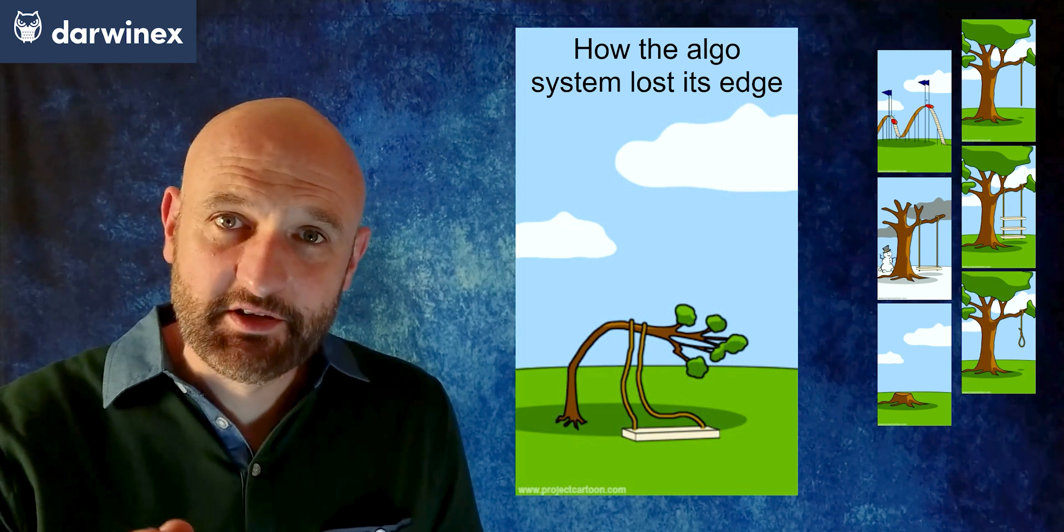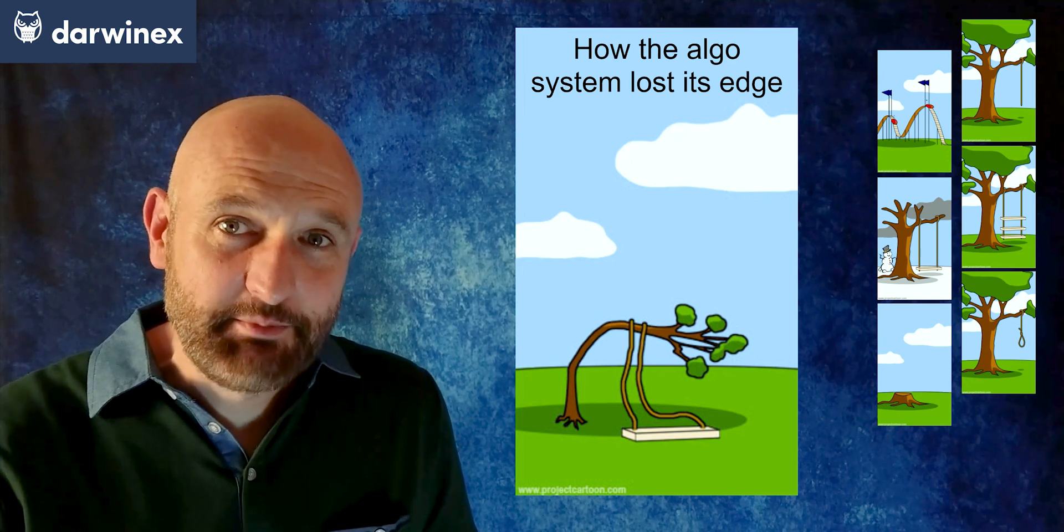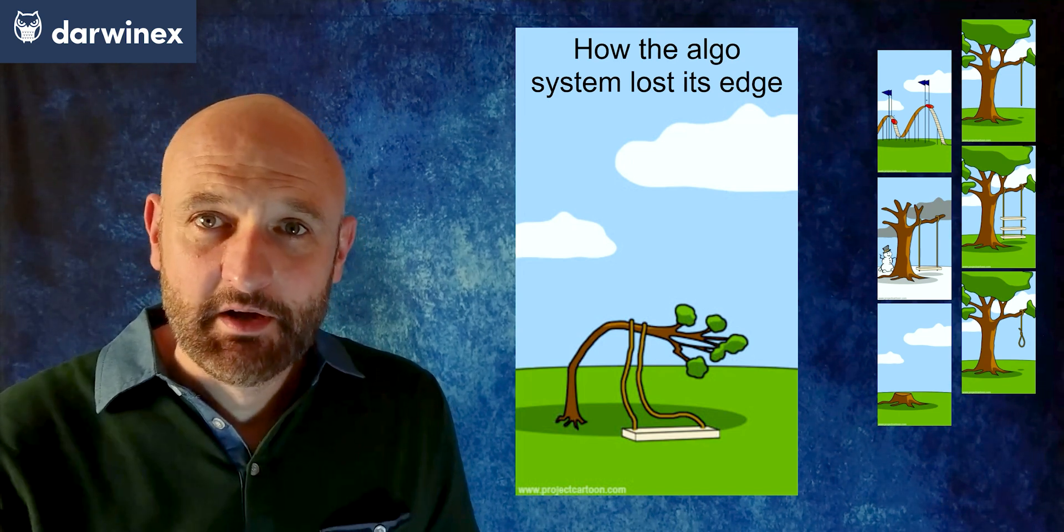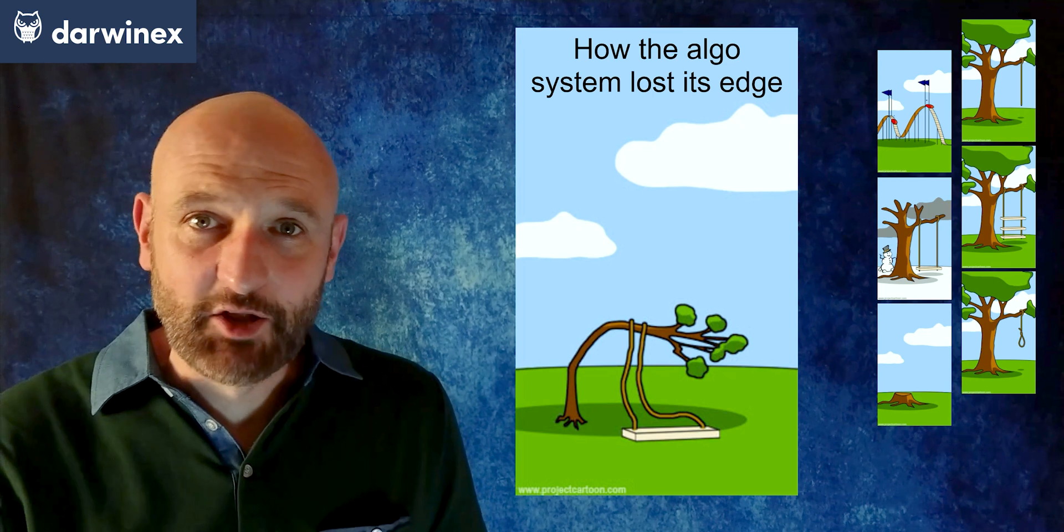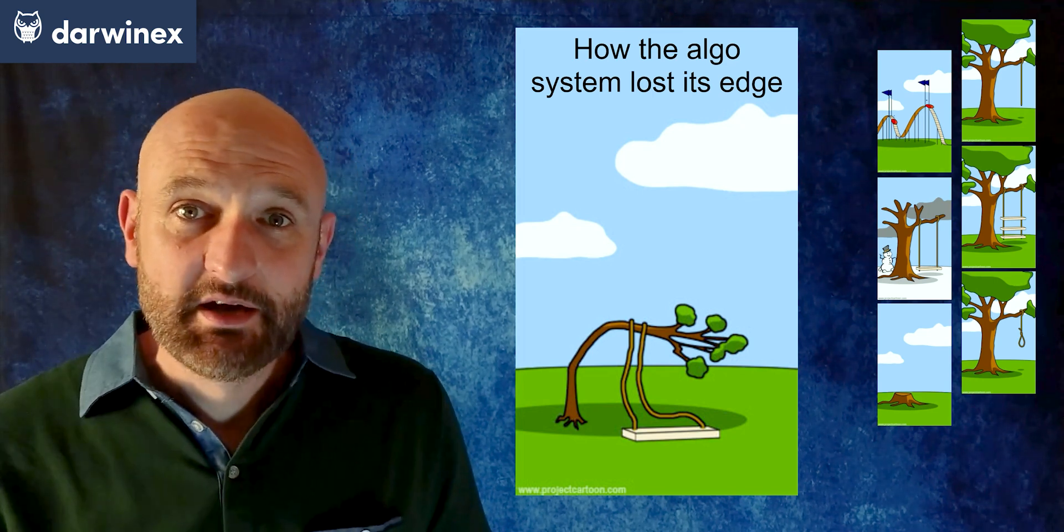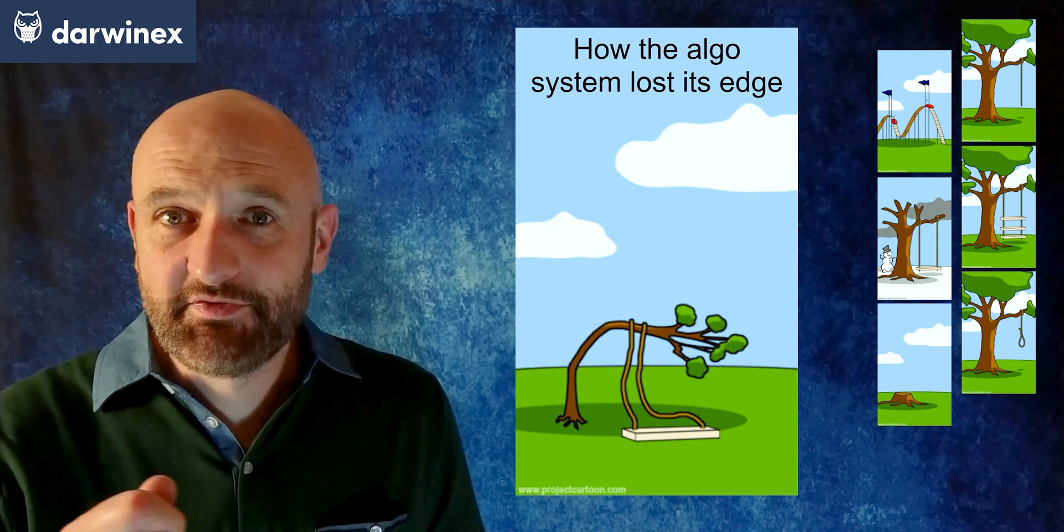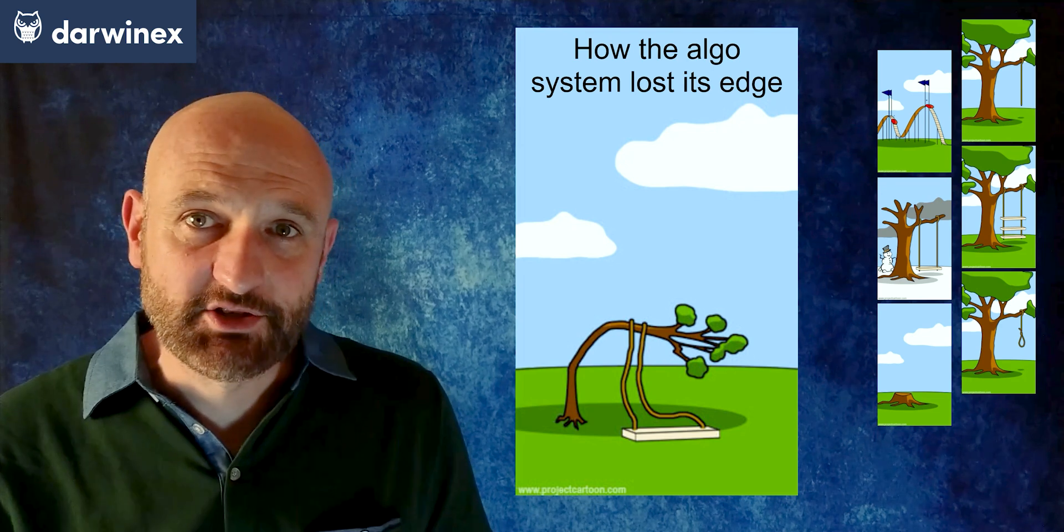Again, forgive me for continuing to state this, but one answer is to keep your systems simple. This will have the effect of helping to avoid overfitting but also will mean your system is much more resilient to changes in market dynamics, meaning it's far less likely to lose its edge. So it's a win-win and this brings us on to our final image.